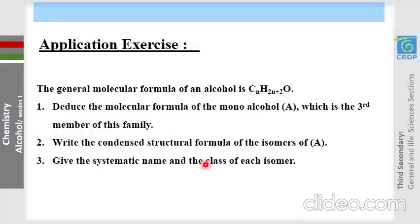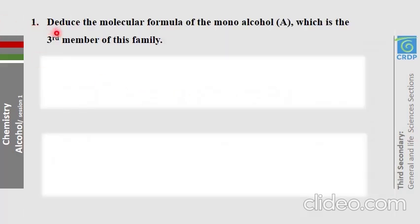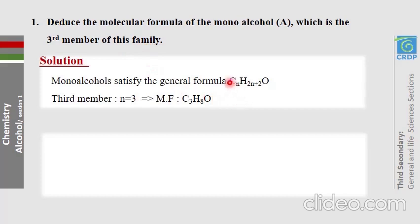Let us do a final application exercise to review everything in this chapter. The general molecular formula of an alcohol is CnH2n+2O. Part 1 asks us to deduce the molecular formula of the third member of this family. Since it is the third member, n = 3, giving C3H8O.